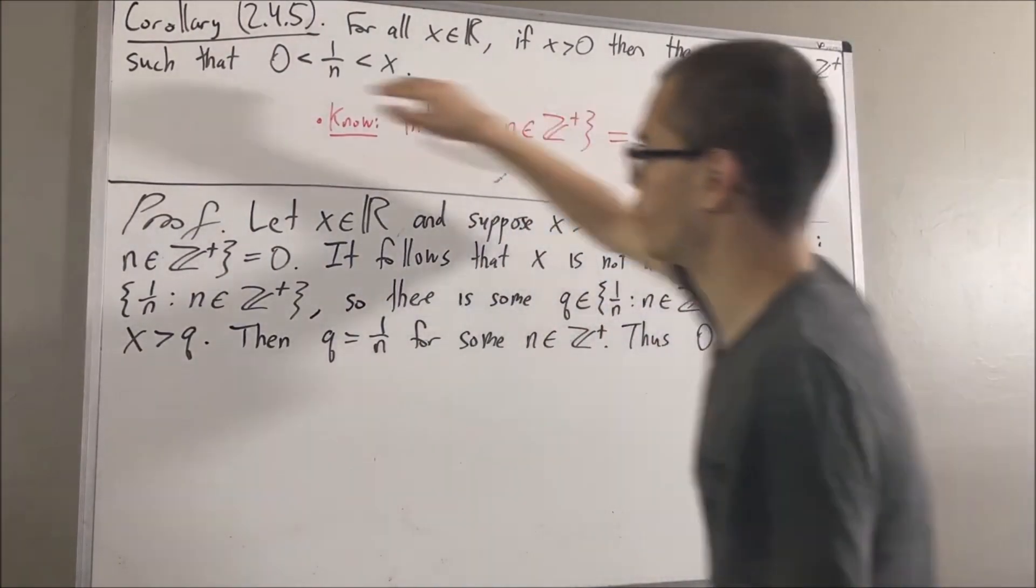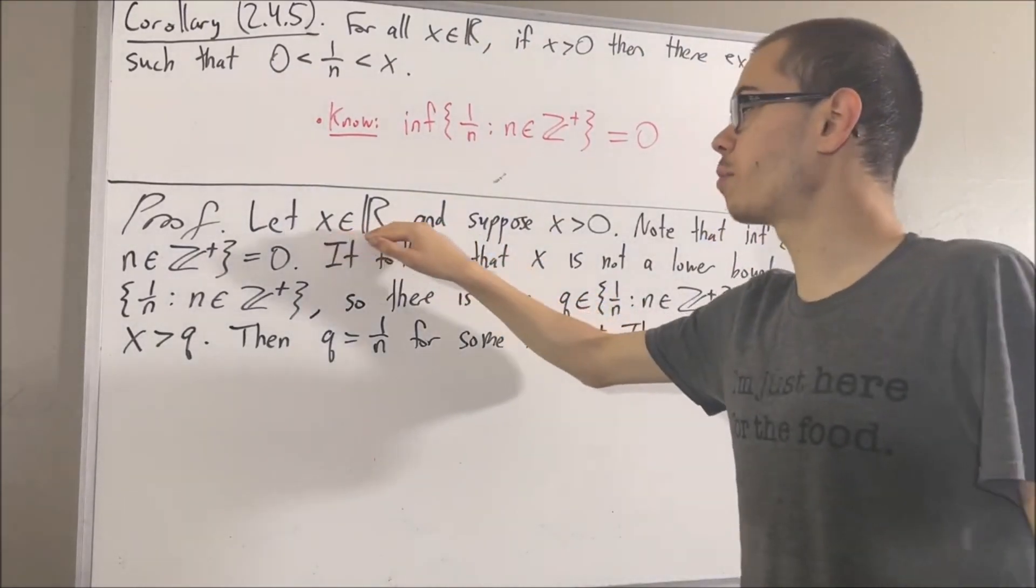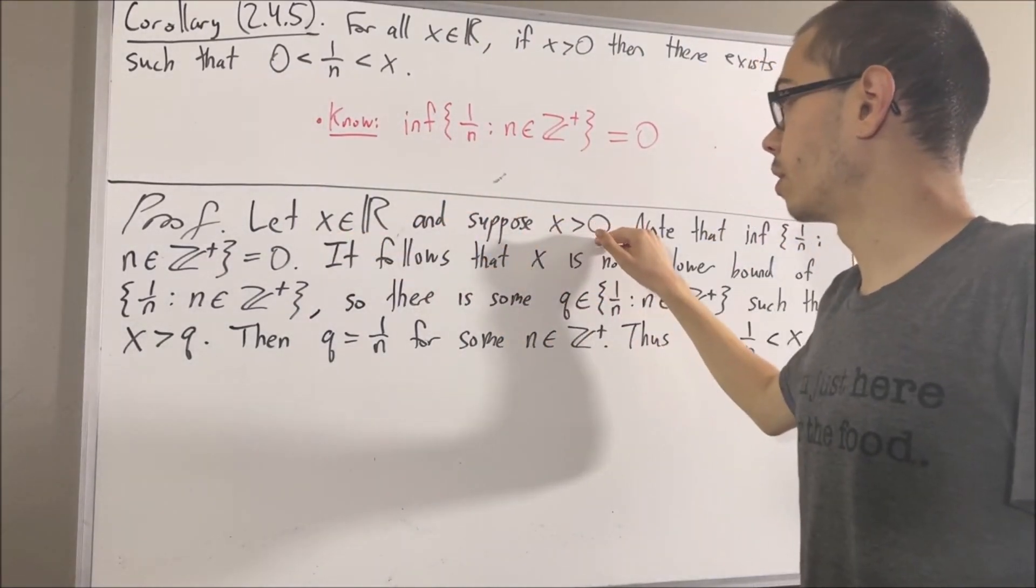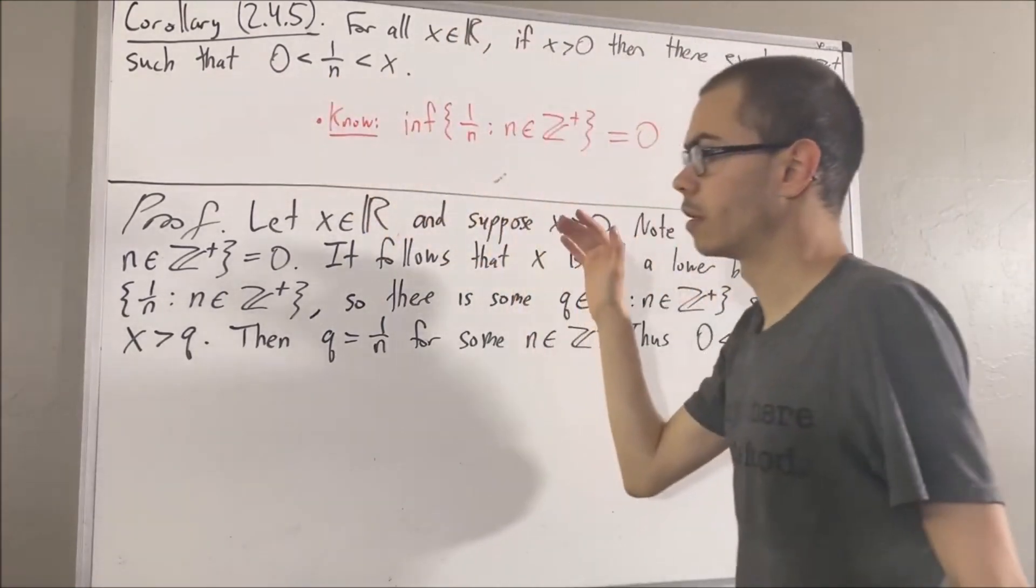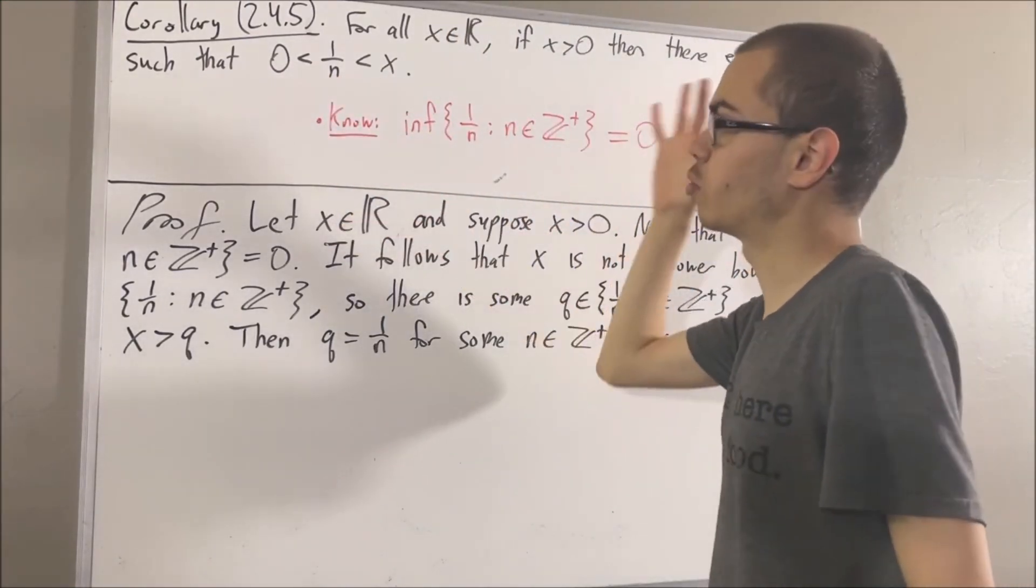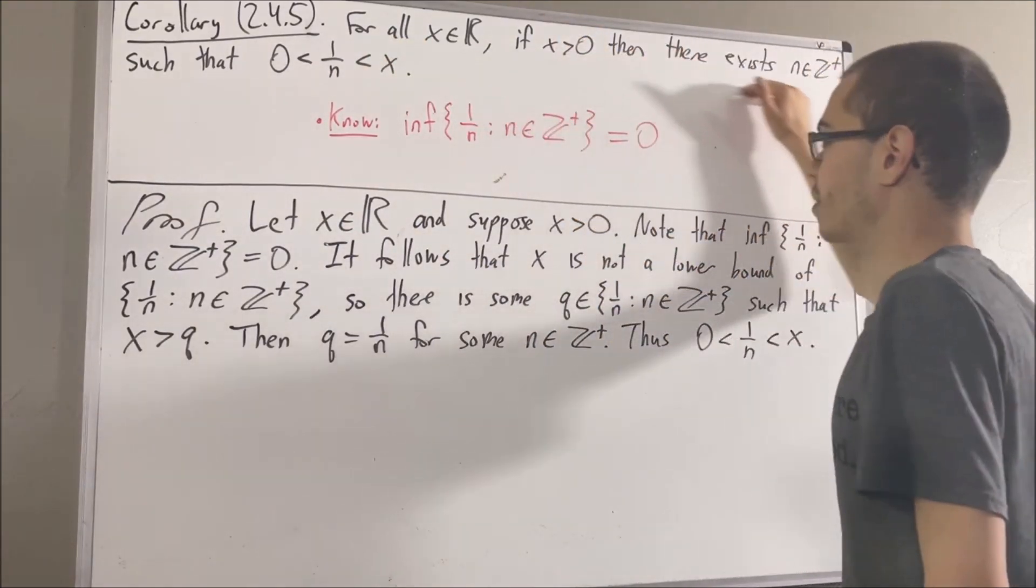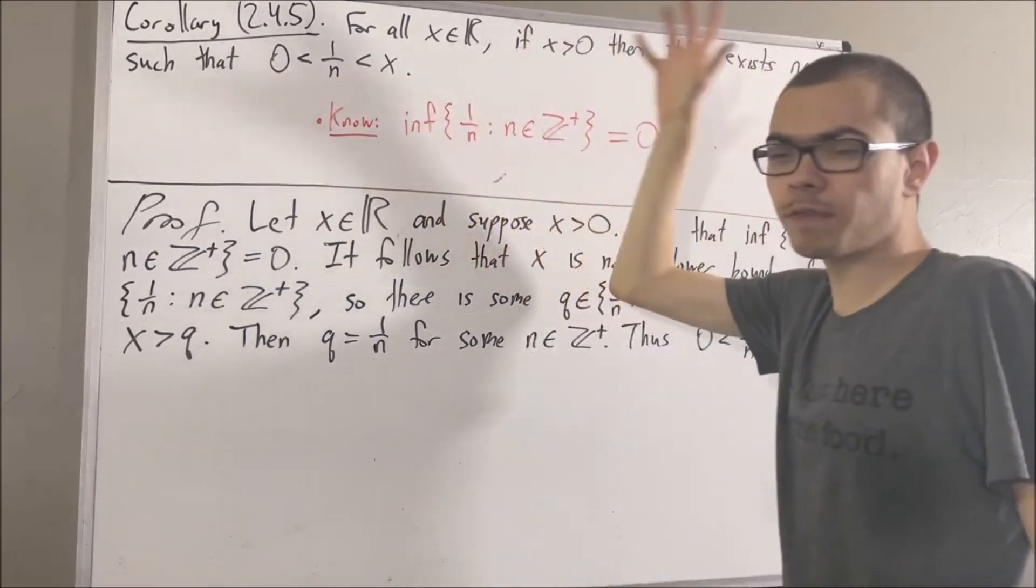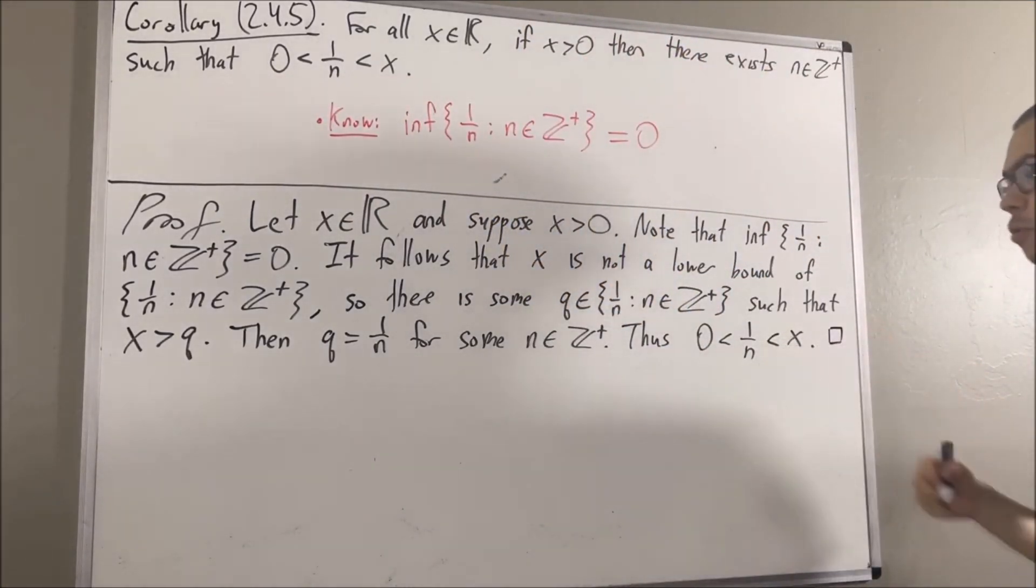So yeah, this is true. And so if we put this all together, we gave ourselves an arbitrary real number x greater than zero. And from there, we deduced that this has to be true. Since x was arbitrary, this means we have shown that for all real numbers x, if x is greater than zero, then this is true. So we have proven exactly what we wanted to prove. So this completes the proof.